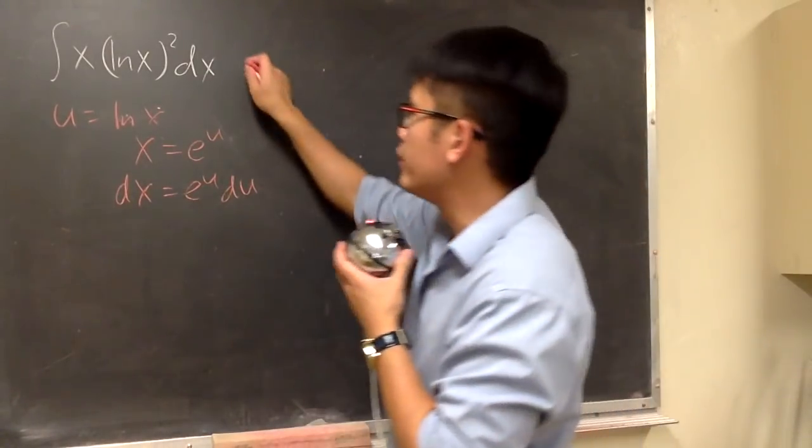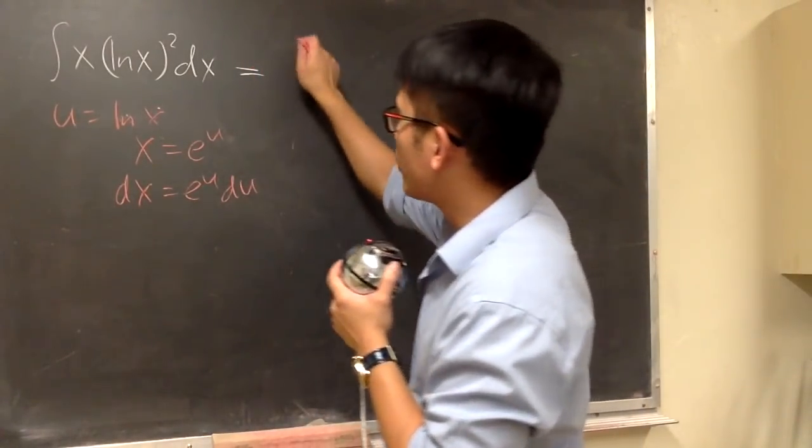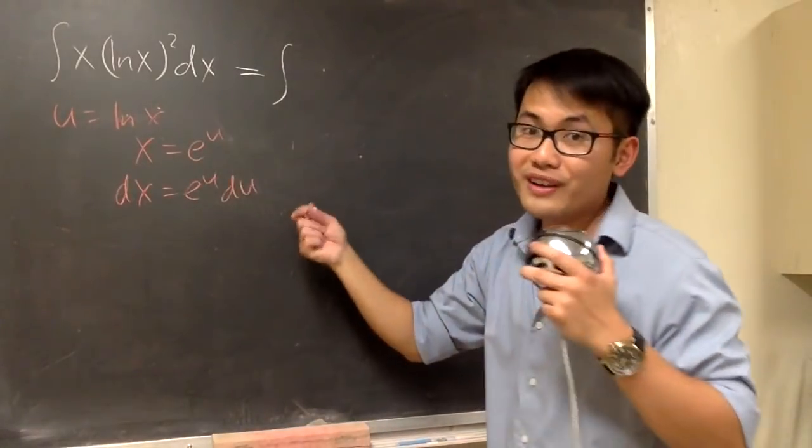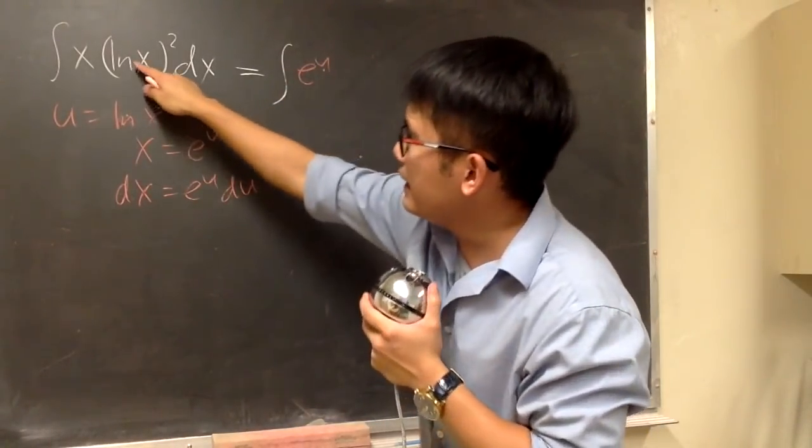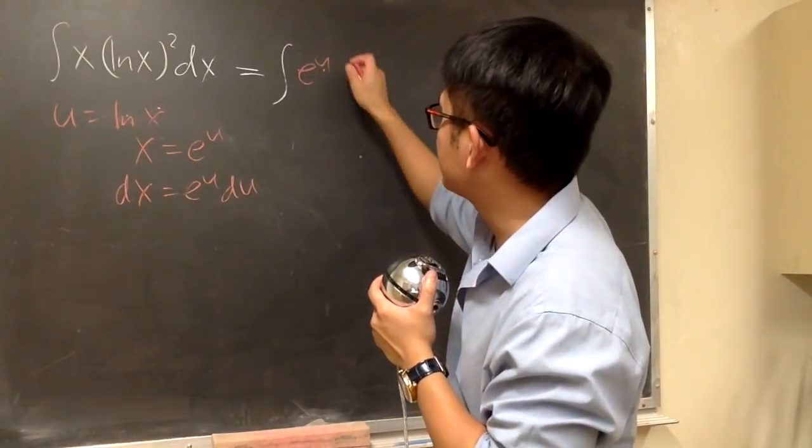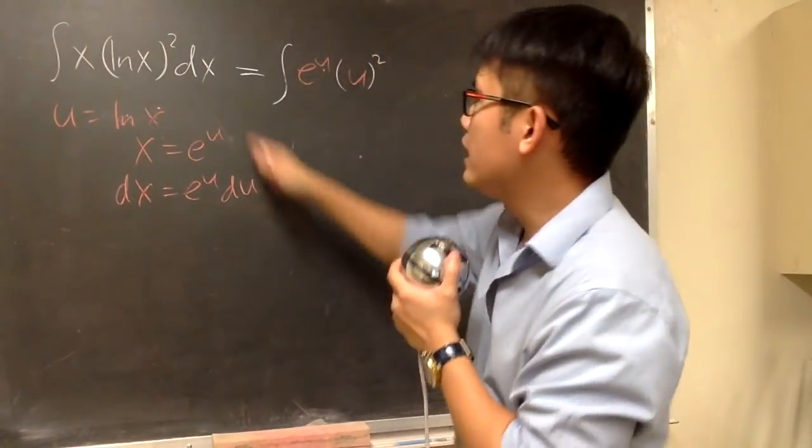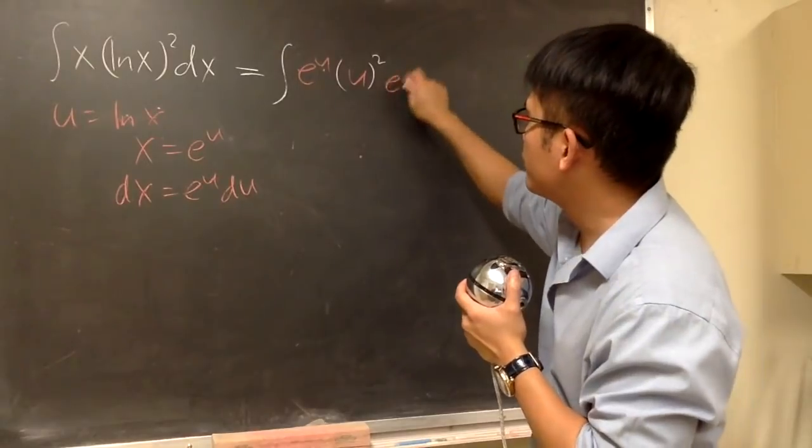And now we can take this integral into the u-world. This is going to be the integral. The x is what? e to the u we found it already, so this is e to the u and then right here we have ln x is just u so we have u but then that's in the parentheses and then raised to the second power. And then for the dx is what? e to the u du.